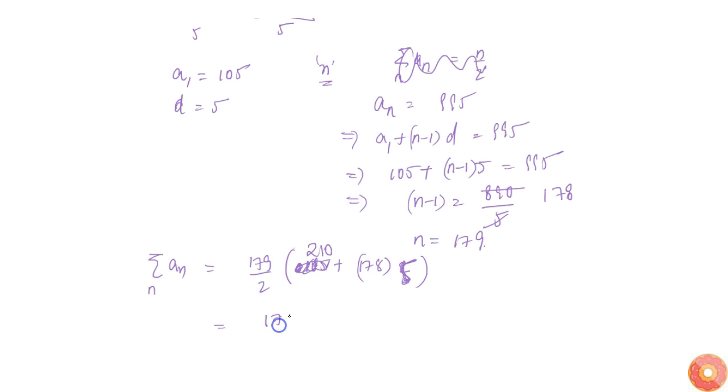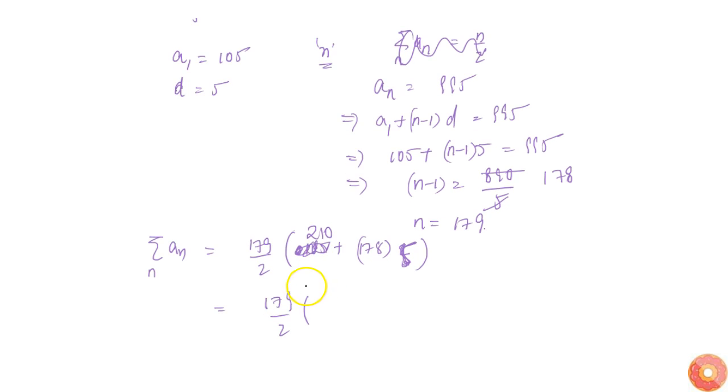This is equal to 179 by 2 into 210 plus 890, which will be equal to 179 times 1100 by 2. So this will be equal to 179 times 1100 by 2.